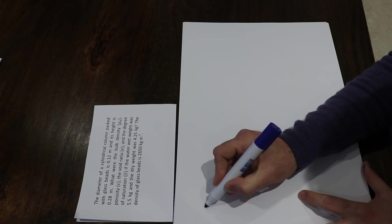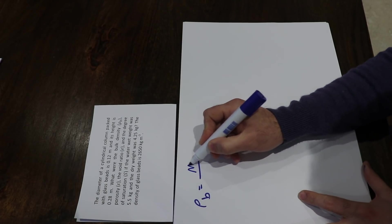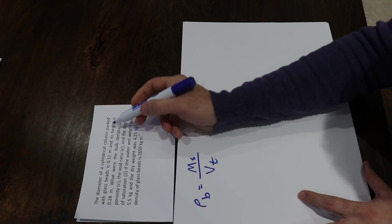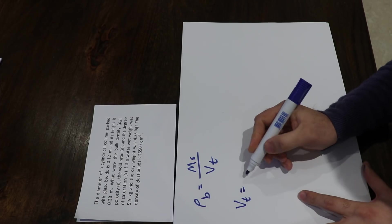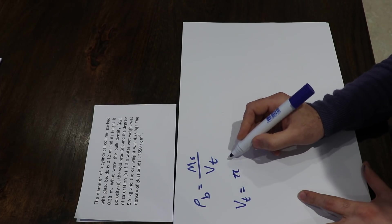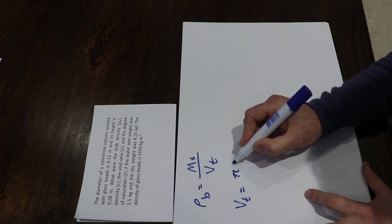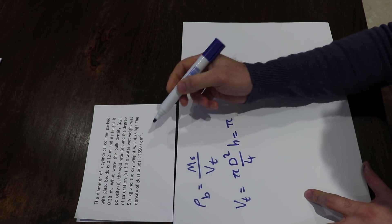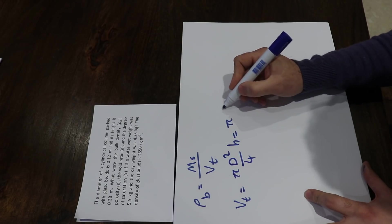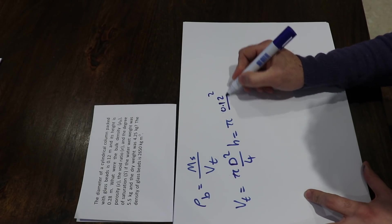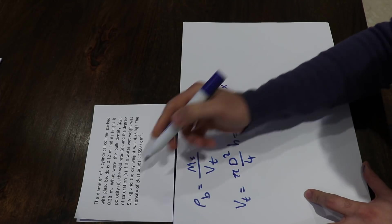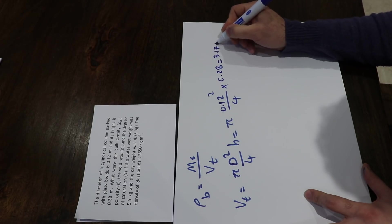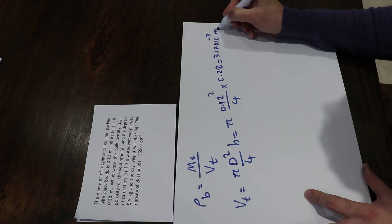To calculate the bulk density, we have the equation rho_b equal to mass of the dry solid divided by total volume. We need to calculate the total volume of that packed bed. It's a cylindrical column and the volume is pi D² divided by 4 times the height, which equals pi times (0.12 m)² divided by 4 times 0.28, giving 3.17 × 10⁻³ cubic meters.